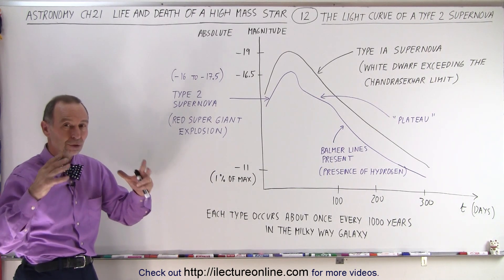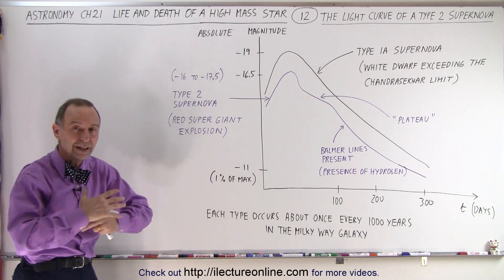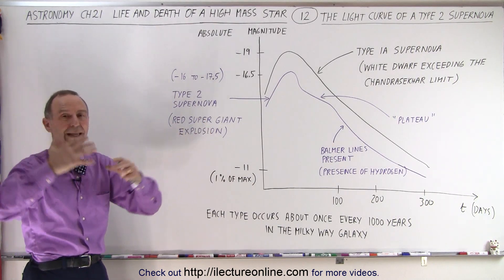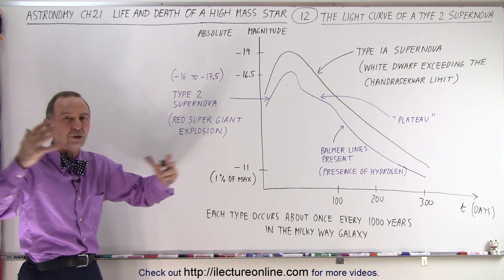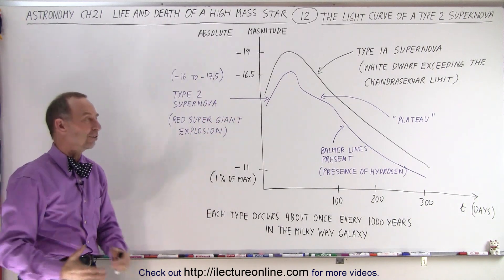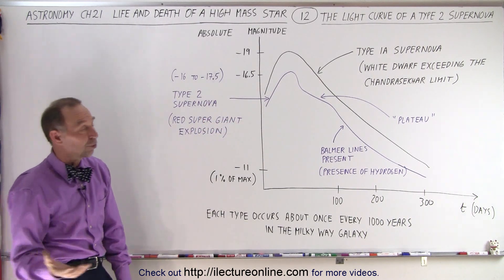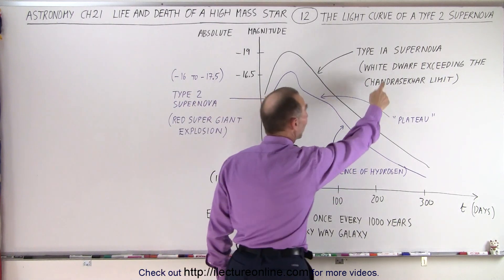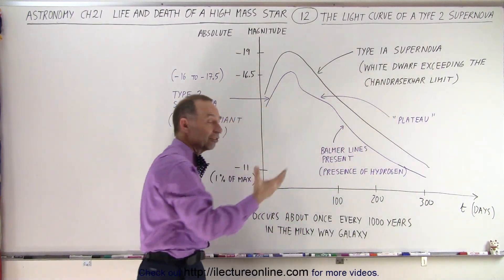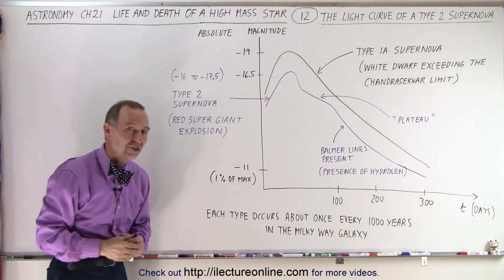The final end moments when the core implodes in itself and the big shock wave goes out and the neutrinos heat up the layers to the point where they blast away the outer layers of the star. The other type of supernova, the Type 1a, is when a white dwarf exceeds the Chandrasekhar limit and implodes in on itself.